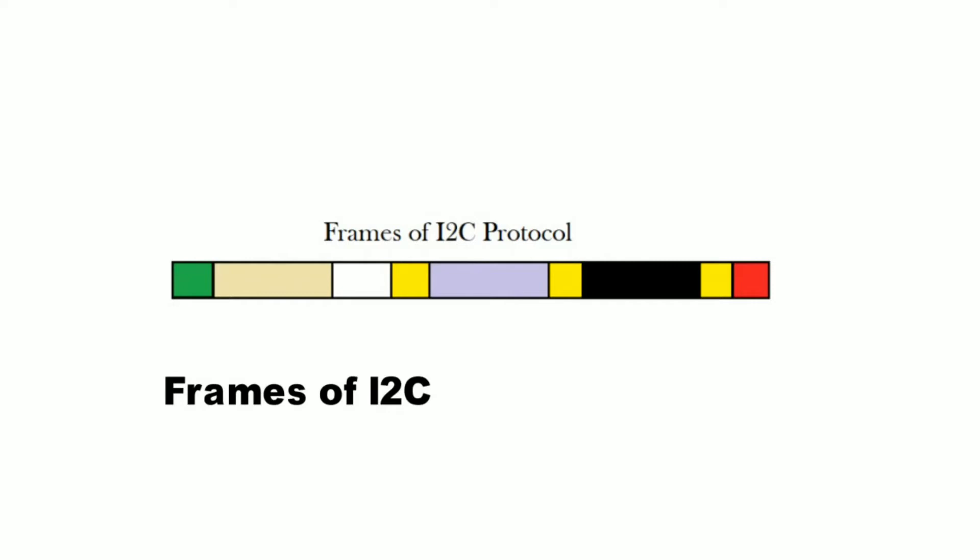Red is the end of bit, that is stop bit. And yellow is an acknowledgement. So whenever the data receives, the slave acknowledges the master. Then apart from that, we have four more fields.